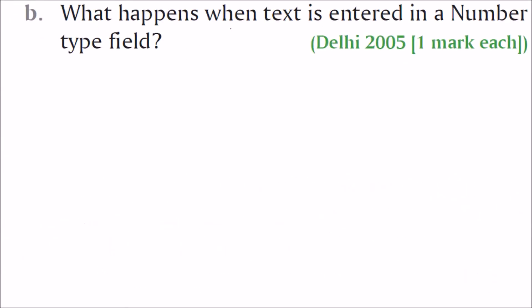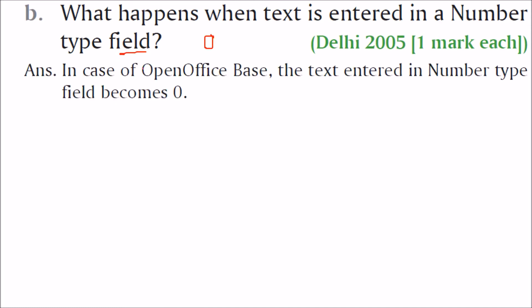What happens when text is entered in a number type field? In Open Office Base, text entered in a number type field becomes 0.